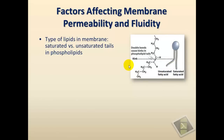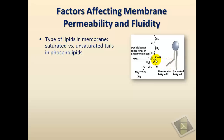There are three important factors that influence the permeability and fluidity of biological membranes. The first is the chemical nature of the phospholipid molecules — specifically the type of hydrocarbon chain. A saturated chain has all carbons saturated with hydrogen atoms, while an unsaturated chain has a double bond between two carbons, causing a kink in the chain.